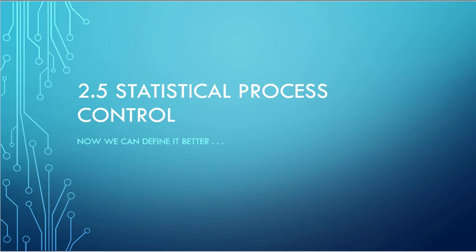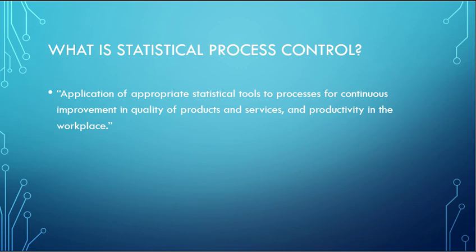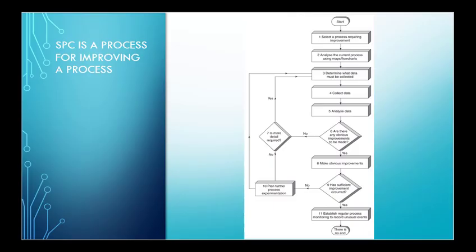Now we've talked about processes long enough that we can really define what is statistical process control. When we read the definition, we can see that we're going to use statistical tools to improve the quality of our products, services, and productivity by improving our processes. We are applying statistics to analyze the process, but the goal is not the process — the goal is the quality of the products and services we're providing and the efficiency of how we're doing it.